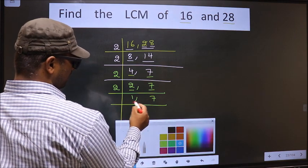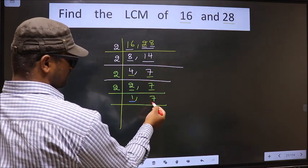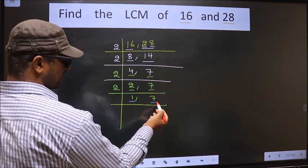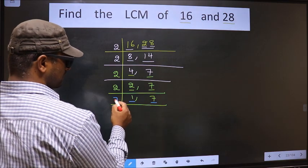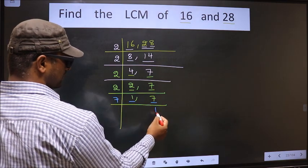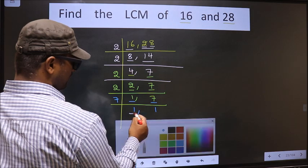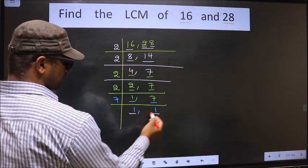We got 1 here. So focus on the other number, that is 7. 7 is a prime number, so 7 divided by 7 gives 1. We got 1 in both places.